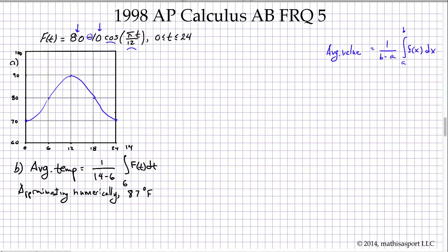Let's look at part C. Part C is a little more interesting because we have to find when the air conditioner kicks in, and that's whenever the temperature exceeds or reaches 78 degrees. We're going to handle this numerically.